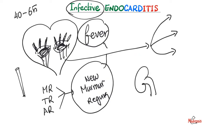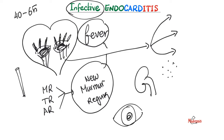I can also have immunological phenomena besides the embolic phenomena. I get glomerulonephritis, petechiae on my skin, splinter hemorrhages, Osler nodes, and Janeway lesions. I get Roth spots on my retina, etc. All of these are symptoms of infective endocarditis.